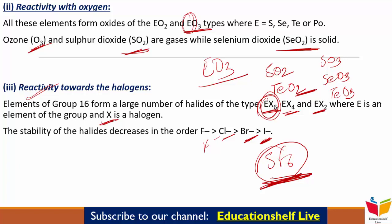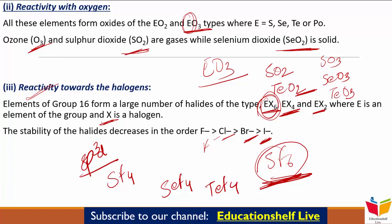Tetra fluorides की बात करें तो SF₄ gas होगी, SeF₄ liquid होगी, और TeF₄ solid होगी। इन fluorides में sp3d hybridization होता है, इसलिए इनका structure trigonal bipyramidal होता है, जिसमें एक equatorial position lone pair of electrons occupy करके रखता है — इस geometry को हम see-saw geometry भी बोलते हैं। Oxygen को छोड़कर बाकी elements di-chlorides और di-bromides बनाते हैं, जो SP3 hybridization से बनती हैं, इसलिए इनका structure tetrahedral होता है।